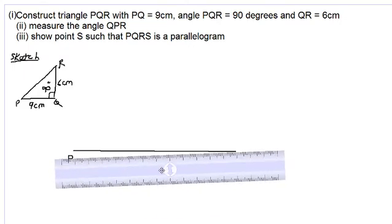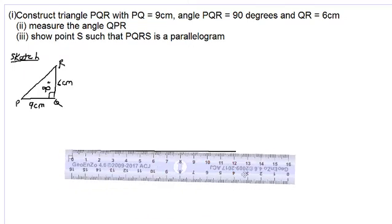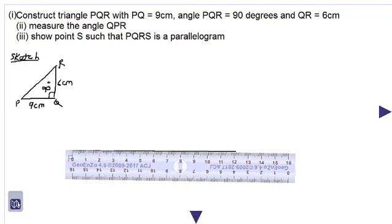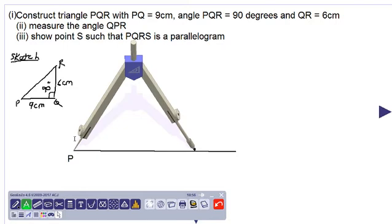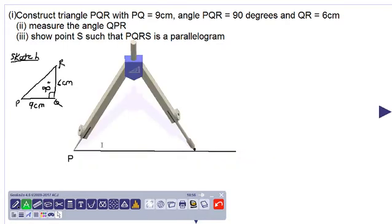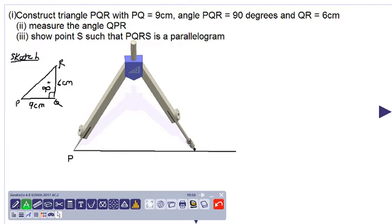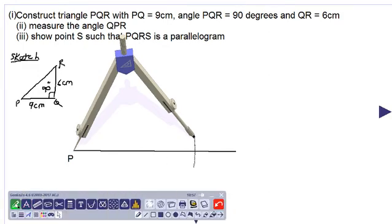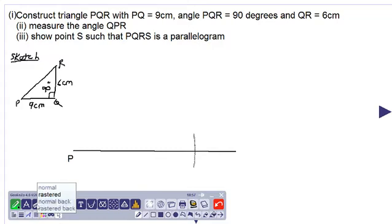We place the compass on the ruler, measuring the distance between the arms of the compass, so we are sure that we have 9 centimeters. We now take out our lighter ruler and draw a construction arc as shown. This should be point Q, so let us label it point Q with our deeper pencil.